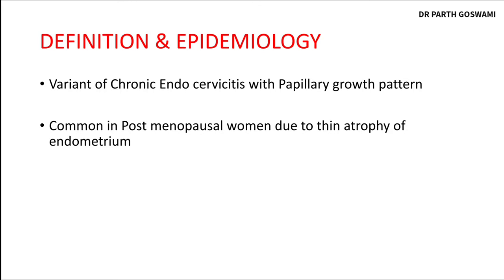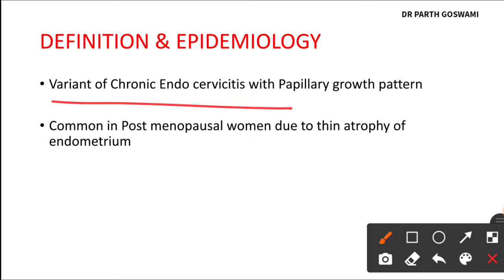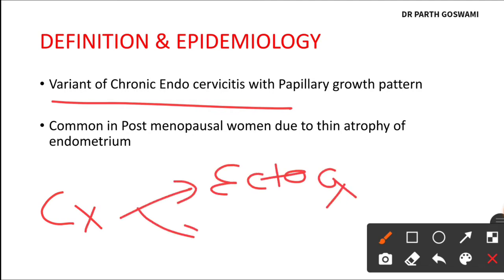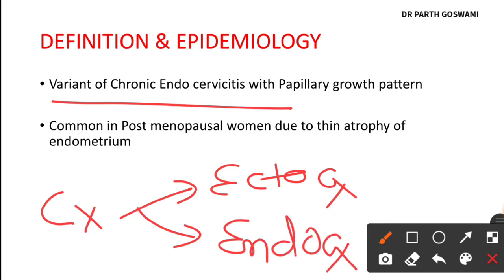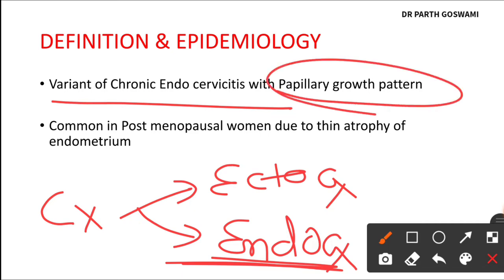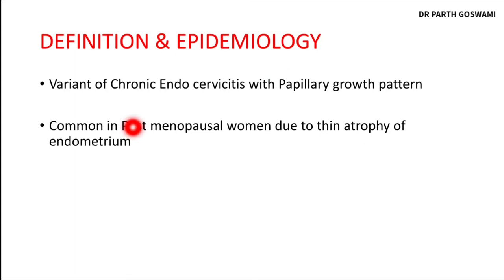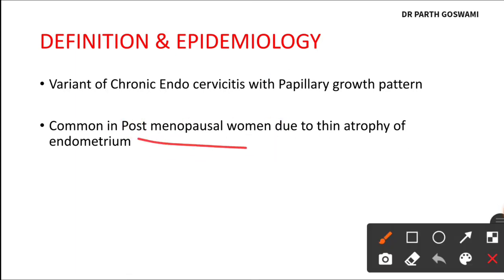Starting with the definition and epidemiology: papillary endocervicitis is one of the variants of chronic endocervicitis, meaning it is the chronic inflammation of the endocervix area. We know that the cervix is divided into two portions — ectocervix and endocervix — and the inflammation of the endocervix with a papillary growth pattern is known as papillary endocervicitis. This disease is common in postmenopausal women.